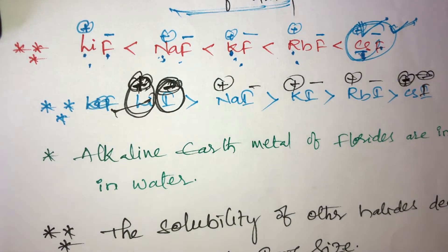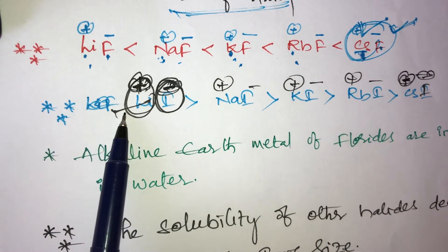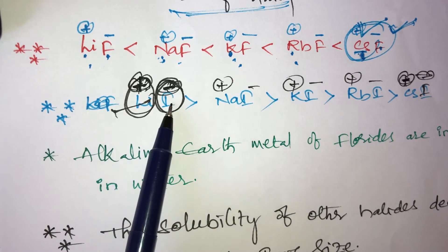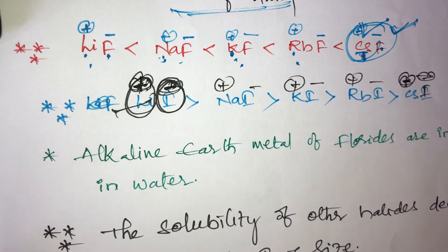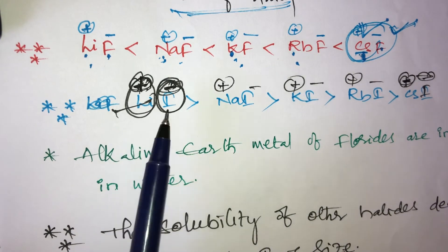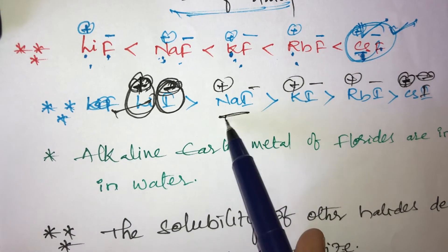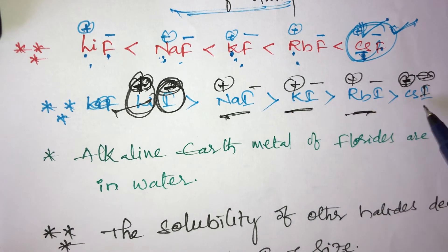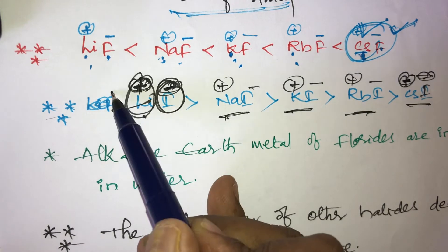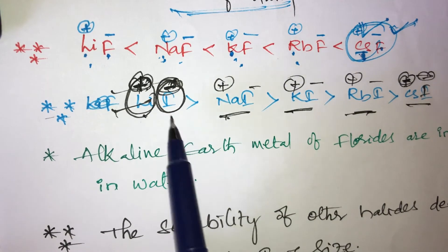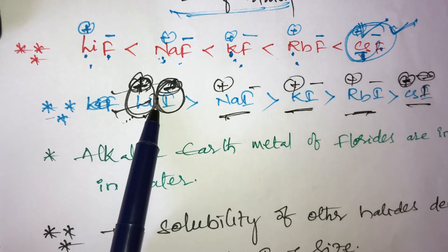If both cation and anion are large size, that is least soluble in water. If small size of cation and large size of anion are both present, the compound is highly soluble in water. Solubility order: LiI > NaI > KI > RbI > CsI. Lithium iodide is highly soluble in water due to small size of cation and large size of anion.